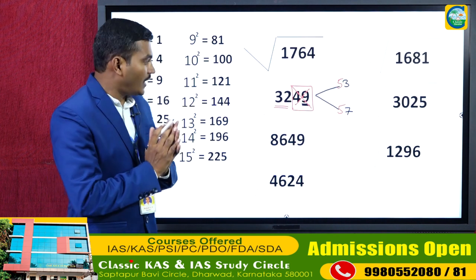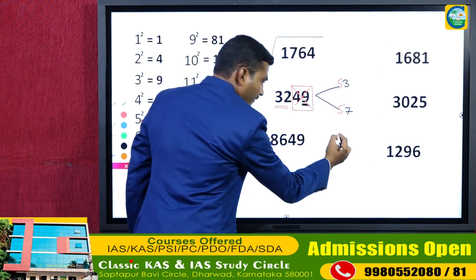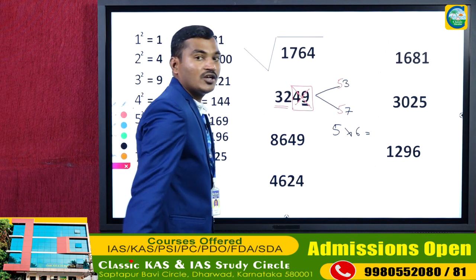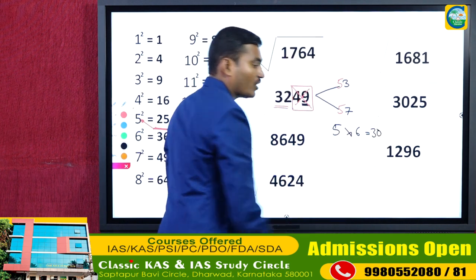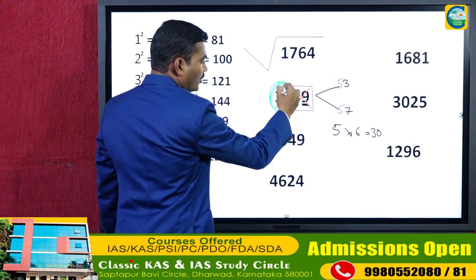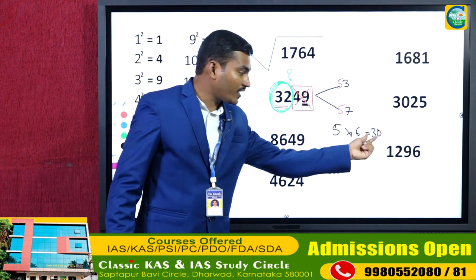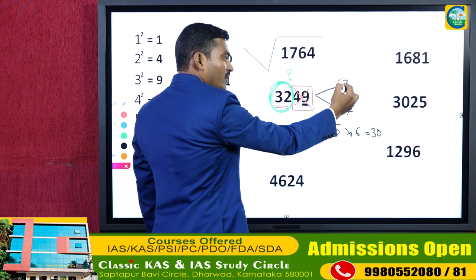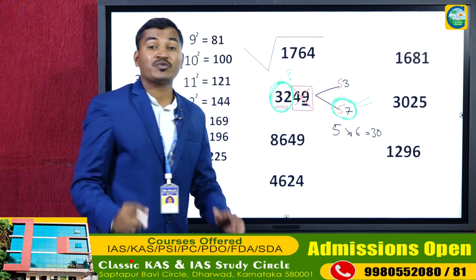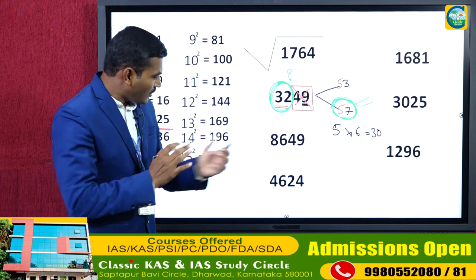To find which is correct, take 5 and multiply by its next number: 5 × 6 = 30. Now ask: is 32 greater than or less than 30? Since 32 is greater than 30, the greater unit digit is the answer. So 57 is the square root of 3249.